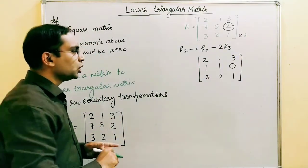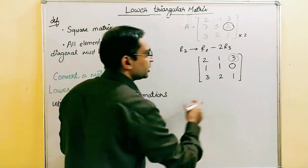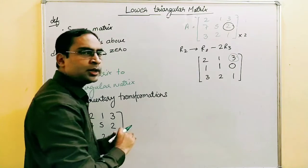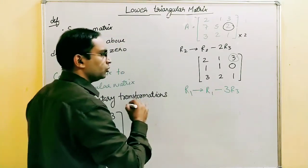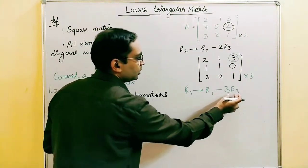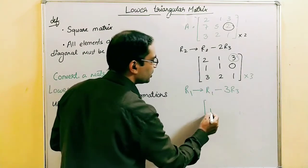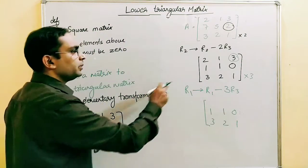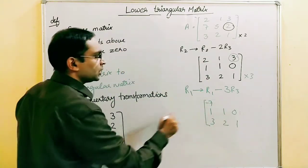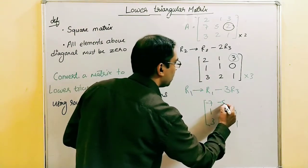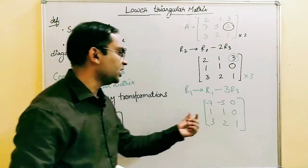Next, still in column three, we move to the top element and again operate with row number three. The operation is: R1 = R1 − 3×R3. Row two and row three remain the same. For row one: multiply row three by three — 3×3 = 9, so 2−9 = −7; 3×2 = 6, so 1−6 = −5; and 3−3 = 0. All necessary elements in column three are now zero.